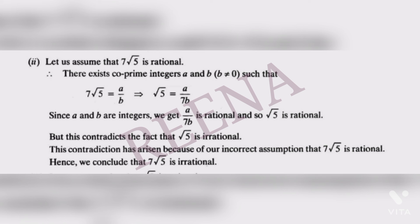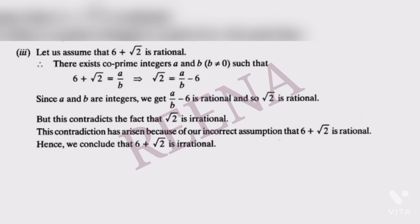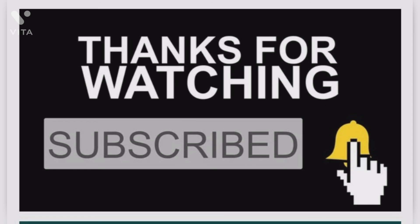Finally, for 6 + √2: assume it is rational. Transposing 6 gives √2 = a/b - 6. Since a and b are integers, a/b - 6 is rational, so √2 would be rational — but √2 is irrational, a contradiction. This contradiction arises from the incorrect assumption, so we conclude that 6 + √2 is irrational. Thank you for watching — like, share, and subscribe for more videos.